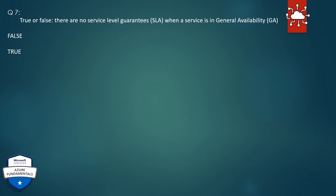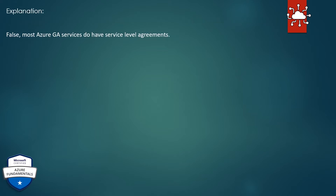Question 7. True or false? There are no service level guarantees (SLA) when a service is in general availability (GA). The correct answer is false. Explanation: Most Azure GA services do have service level agreements.